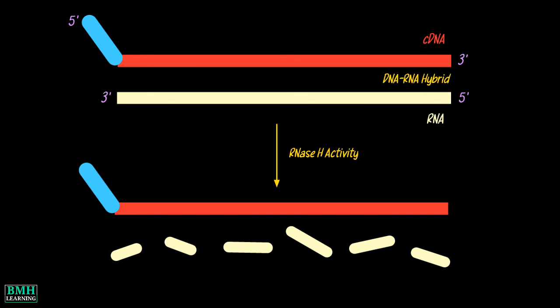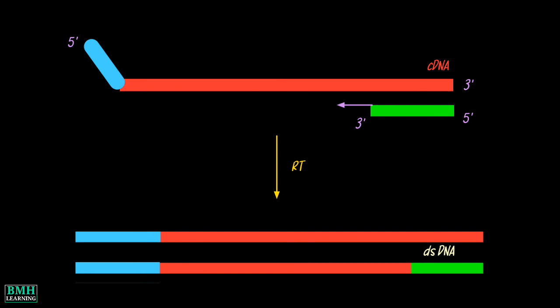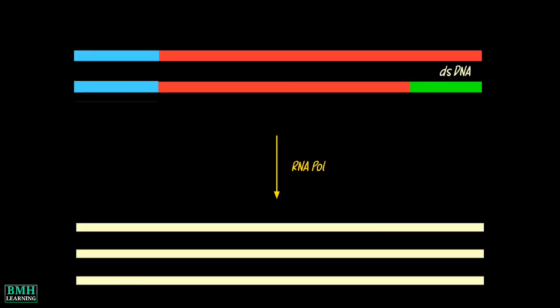Then a second primer binds to the cDNA containing the promoter sequence from the T7 promoter primer. From here on, double-stranded DNA is produced by the RT. This template then gets transcribed to RNA by T7 RNA polymerase and exponential amplification results. This was all, thanks for watching.